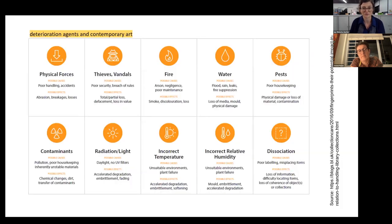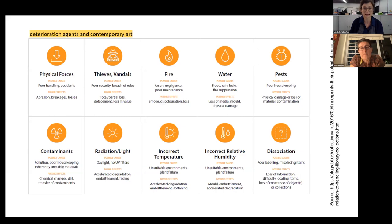The framework of ten agents of deterioration serves to categorize risks to cultural heritage objects and is a reference point for risk assessment — a key tool for setting up preventive strategies. Contemporary art collections comprise physical entities vulnerable to all ten agents. However, as Crystal mentioned, at M+ at that particular moment in time, the issue identified as most urgent yet possible to tackle was the lack of information. This was especially challenging for complex works such as installation art, functional objects, and software-based works, but also relevant to simpler ones such as sculptures and paintings.